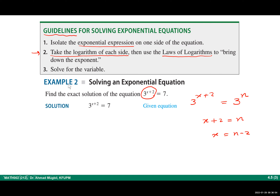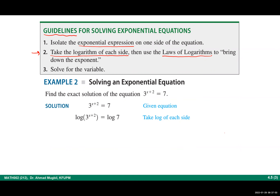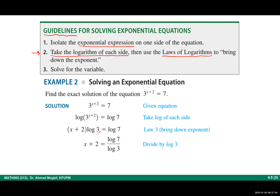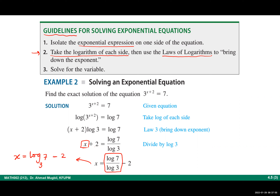Then apply the power property to bring the exponent down, giving (x + 2) multiplied by log 3. Since log 3 is a number, distribute and solve for x. Divide both sides by log 3, then add negative 2 to both sides. You get x equals log 7 over log 3 minus 2. By the change of base formula, this can also be written as log base 3 of 7 minus 2. Both are equivalent forms of the solution.